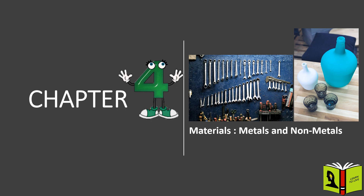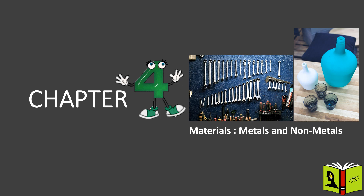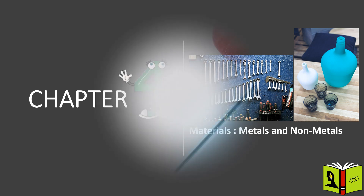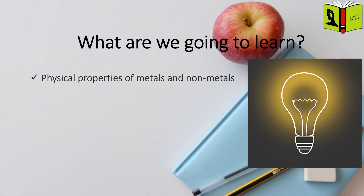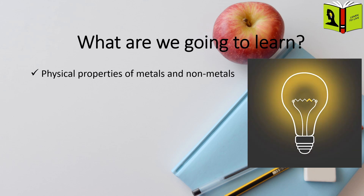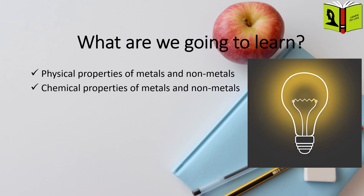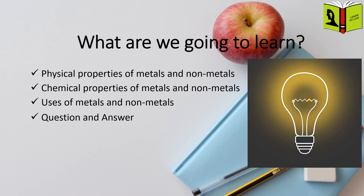There are a lot of materials around us. Different items are made up of different materials depending on the purposes. In this chapter, we will learn about metals and non-metals. We will be learning the following things: physical properties of metals and non-metals, chemical properties of metals and non-metals, uses of metals and non-metals, and finally we will be discussing some questions and answers as a part of revision.